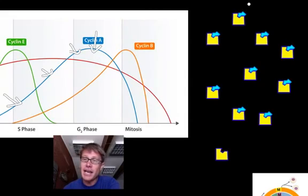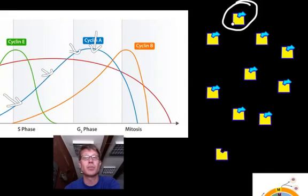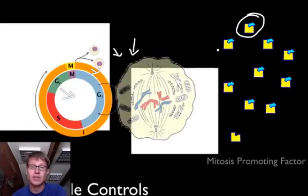Now we have an activated CDK cyclin complex. What does that mean? We have something, a protein that is able to do things. So now you can think of we have like mustered this army and now the army is ready to do something.